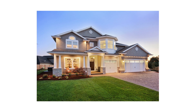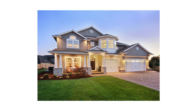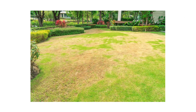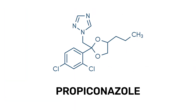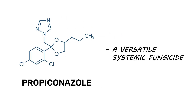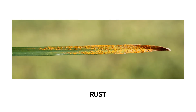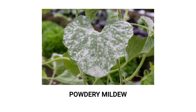A green lawn is impressive on any property, but when lawn diseases and fungi start to threaten your grass and your plants' health, treat them with products made with propiconazole. Propiconazole is a versatile systemic fungicide that will treat and prevent many lawn diseases like brown patch, rust, or powdery mildew. In this video, we'll teach you about the ingredient itself and show you how to use products made with it.